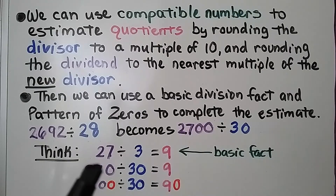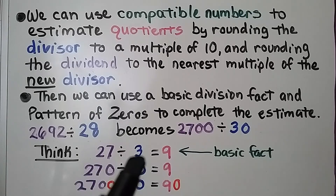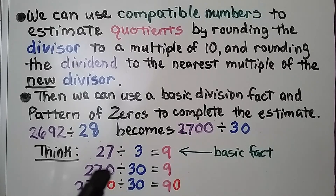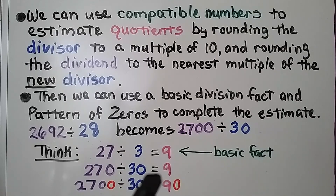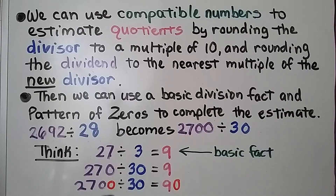The basic fact would be 27 divided by 3, which equals 9. If we add a zero to both the dividend and divisor, our quotient stays the same. But if we add an extra zero only to the dividend, our quotient is going to have an extra zero — it will be equal to 90.